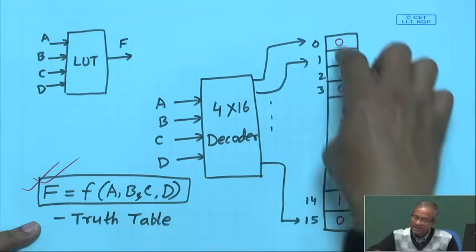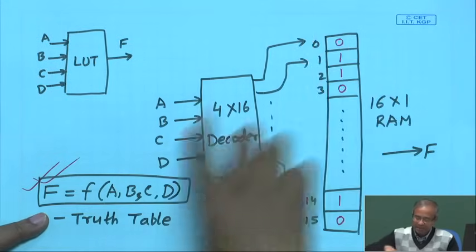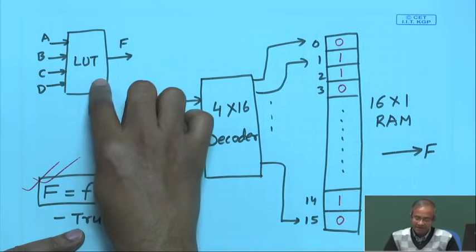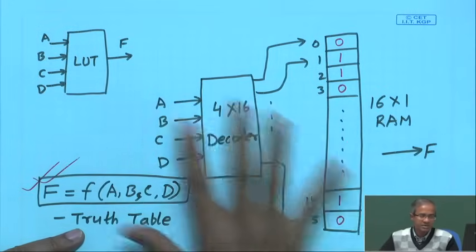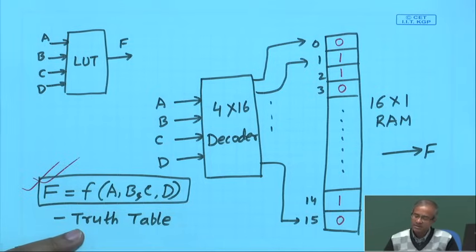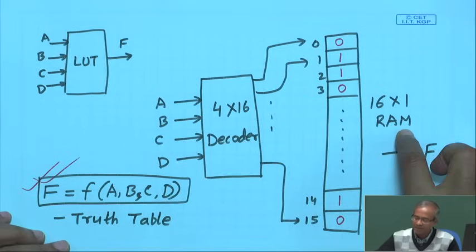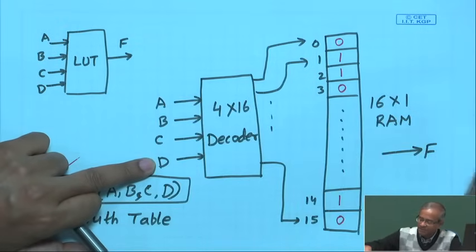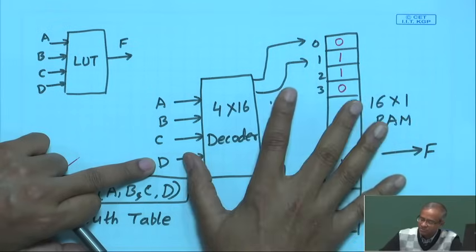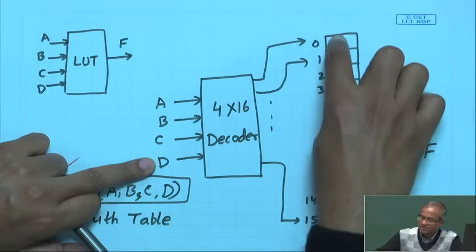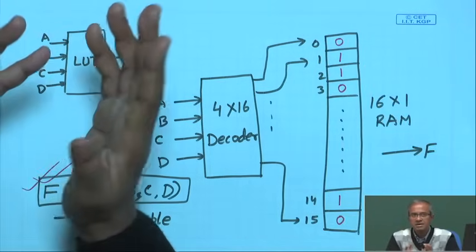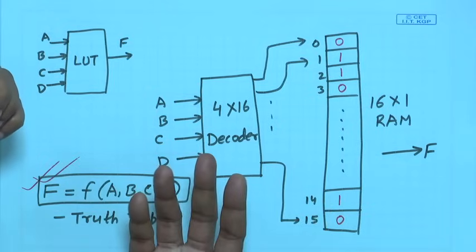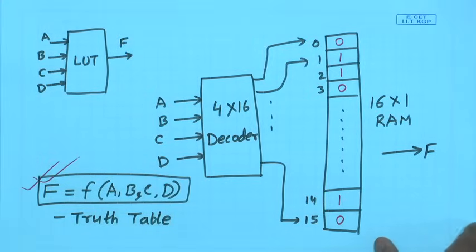In addition, you can also use the LUT as a 16 by 1 RAM — instead of using it as a function, you use A, B, C, D as address inputs; with this you can read or write some data, so you can also use this same LUT structure as a random access memory with 16 locations, each with 1 bit. There are many designs where you require some memory subsystems, so these kinds of LUTs can be used advantageously to create those small memories as well.